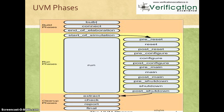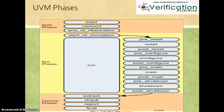The build phase is where you call the constructor or use the factory to create objects. Once you create all the objects, every component enters the connect phase, where you connect all components together and pass interface handles or configuration objects to different components. If there are any tasks you want to do after the build and connect phase but before the simulation phase, there are two phases — end of elaboration and start of simulation — that can be used.